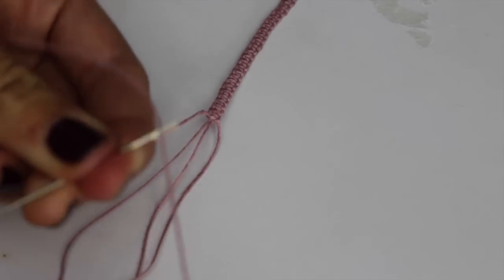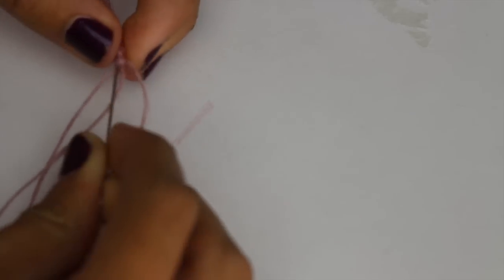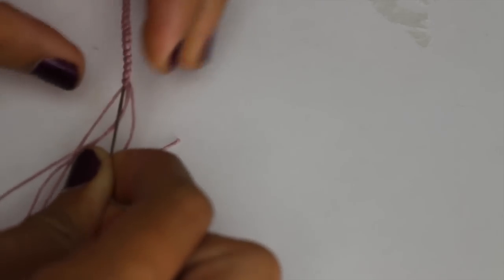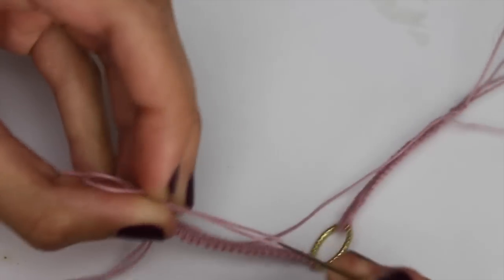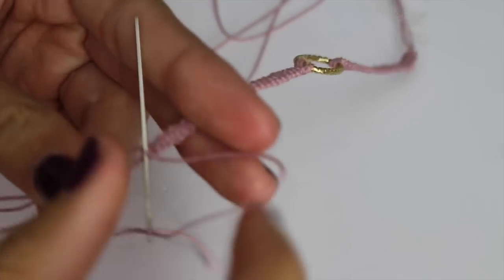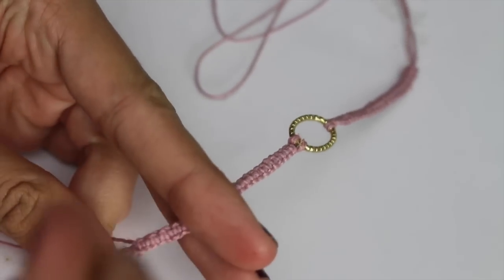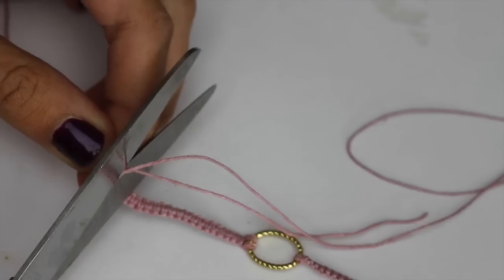Then you're just going to take that needle and kind of invert it and put it back up through the bracelet so it hides the extra strands. I just went up about four or five knots, but it's kind of up to you however many you want to go, and then just cut the excess off.